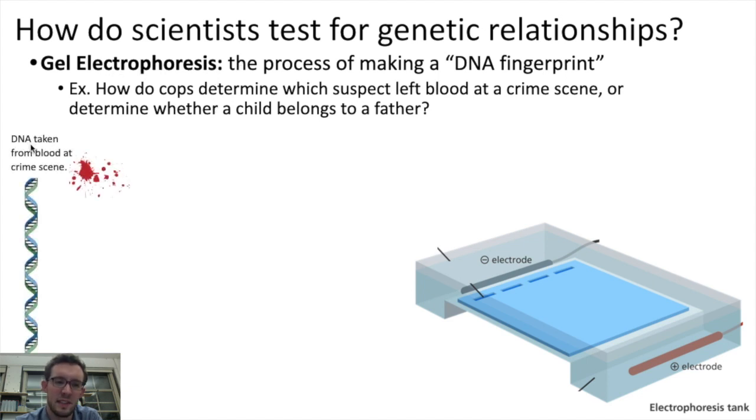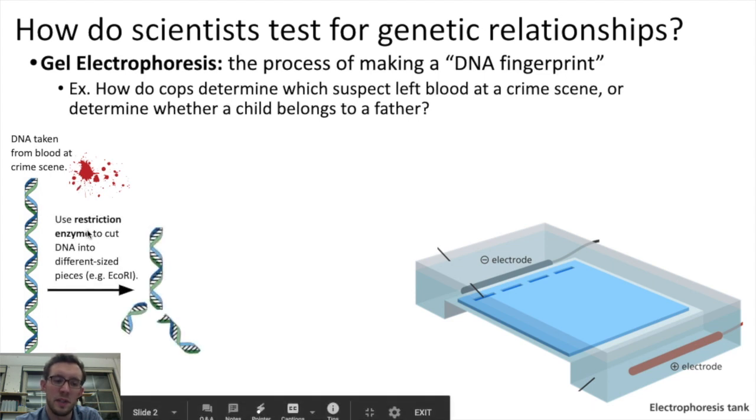So for an example of this, let's take DNA from blood at a crime scene that police think belongs to the suspect. They think it belongs to the perpetrator of a crime. Well, if scientists want to make a DNA fingerprint, what they'll first do is they'll take that DNA and they'll use restriction enzymes to cut that DNA into different sized pieces.